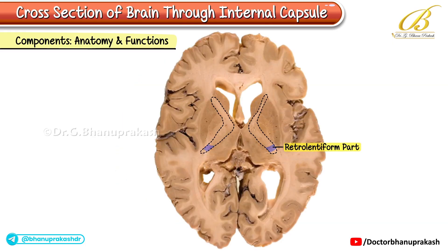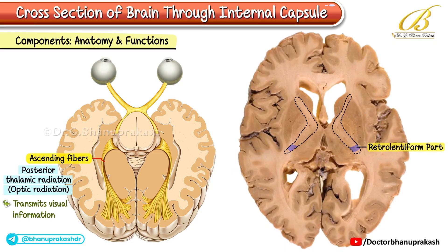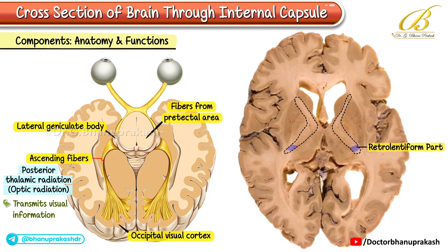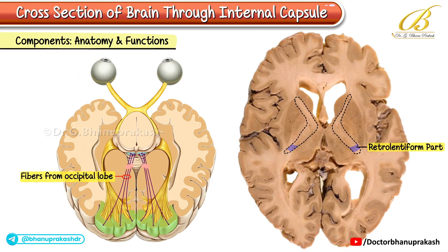Retrolentiform part: The retrolentiform part contains specific ascending and descending fibers. Ascending fibers include the posterior thalamic radiation and optic radiation, which transmits visual information from the lateral geniculate body to the occipital visual cortex, and also includes fibers from the pretectal area. Descending fibers include parietopontine and occipitopontine fibers, as well as fibers from the occipital lobe to the superior colliculus.